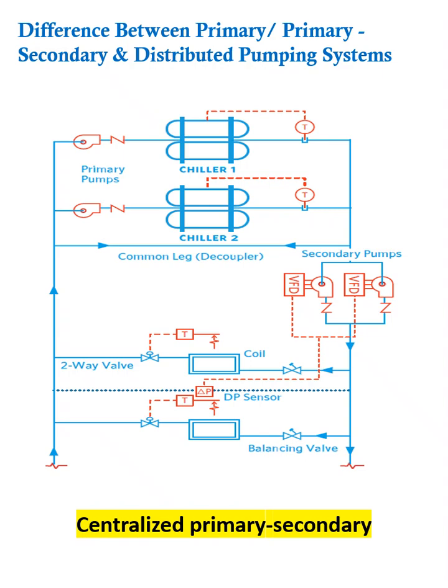The chilled water returns, and with the help of the primary pump, the water is being chilled through the chiller and pumped back to the load side. This typical arrangement is called the primary secondary variable system.